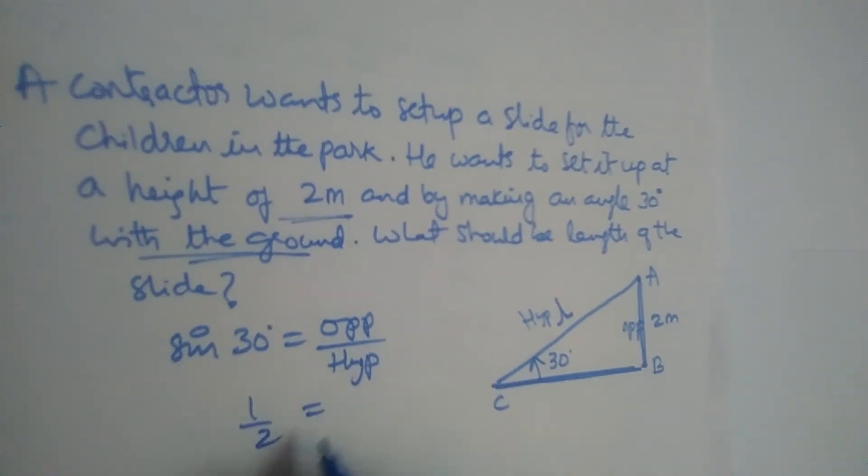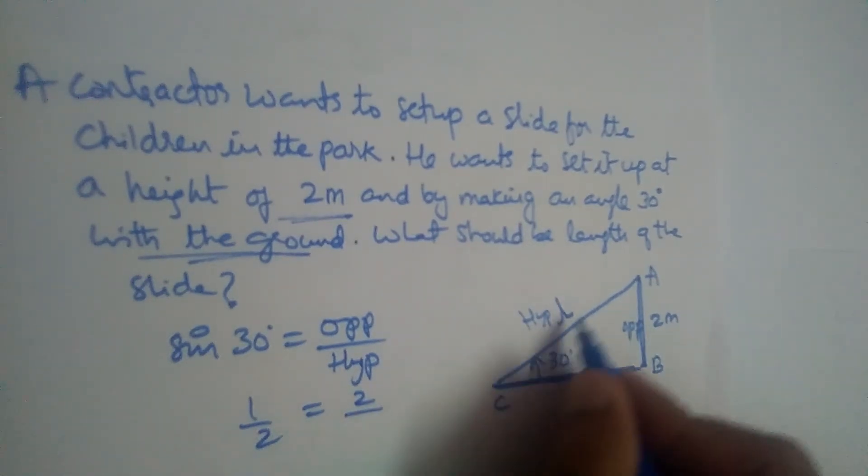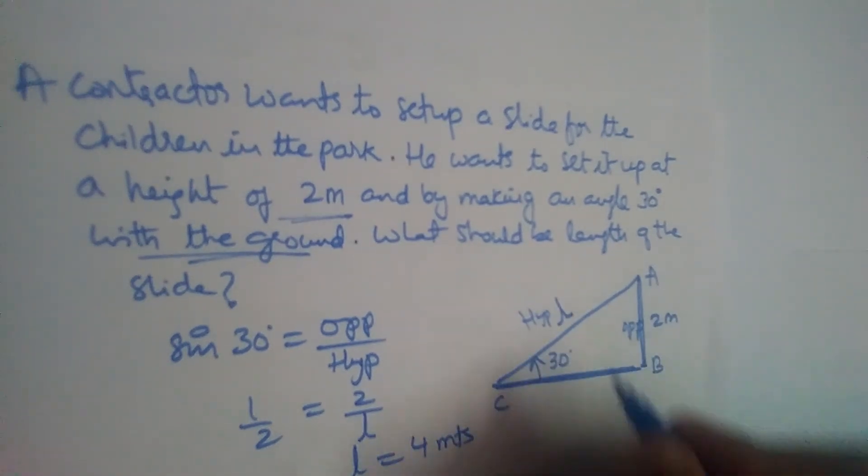So sine 30 is 1 by 2, is equal to opposite side here is 2, divided by hypotenuse is AC or L. If you cross multiply, 1 into L will become L, 2 into 2 is 4. So what should be the length of the slide? It should be 4 meters.